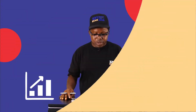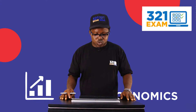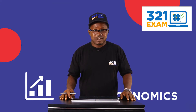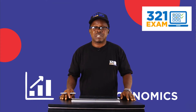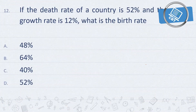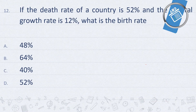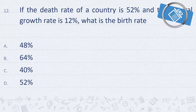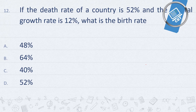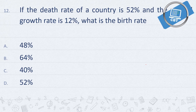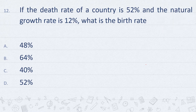We will be going through the past questions, and then we will be able to appraise ourselves. If the death rate of a country is 52% and the natural growth rate is 12%, what is the birth rate?